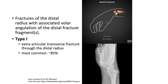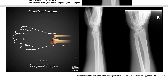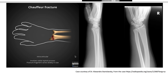A Smith fracture is a fracture of the distal radius with associated volar angulation of the distal fracture fragments. Type 1 is extra-articular and is the most common. A chauffeur fracture is intra-articular and involves the radial styloid process; the fracture fragment varies widely in size.